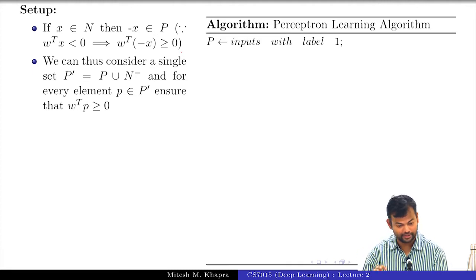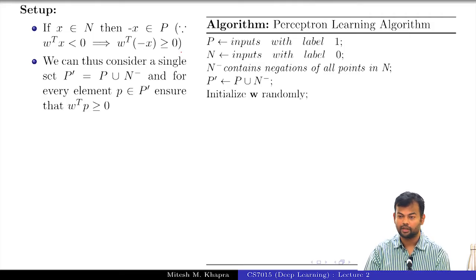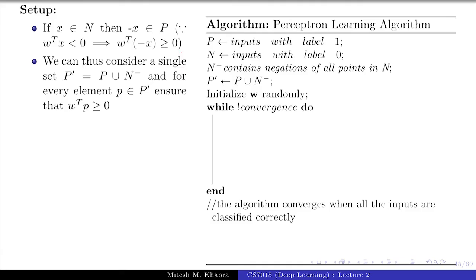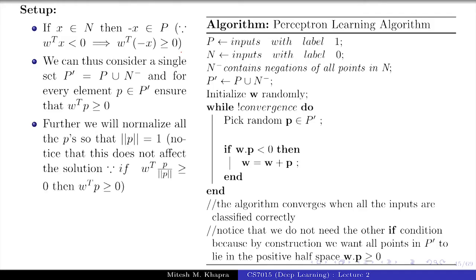In this setup, inputs with label 1 form P, inputs with label 0 form N, and N-minus contains the negation of all points in N, so P prime is the union of these. I start by initializing W randomly; while convergence, I pick a random P from P prime. The if-condition is now just W transpose P less than 0 — I do not need the other if-condition because everything is now positive. I am also going to normalize P, making it unit norm. That does not change anything since we are talking in terms of angles and I am not changing the direction of the vector.